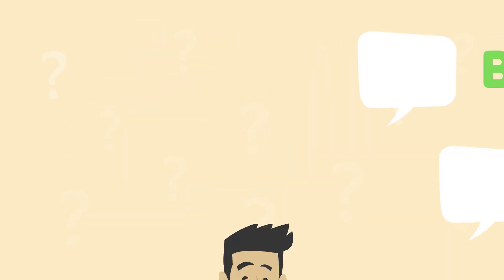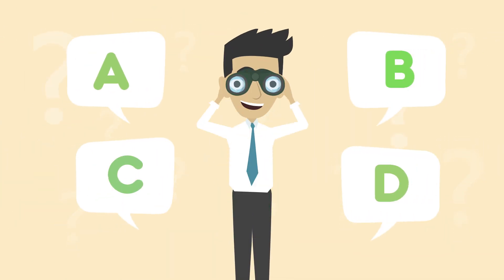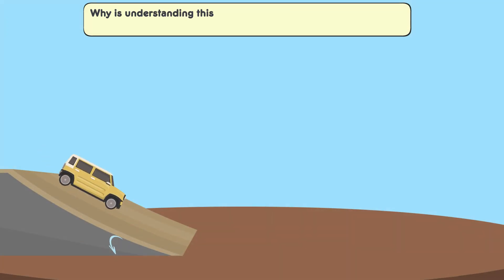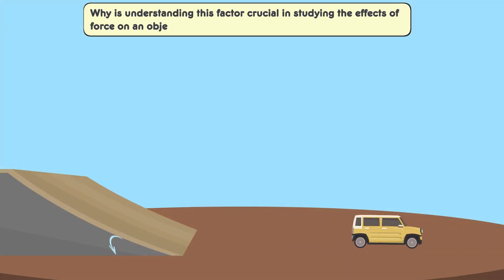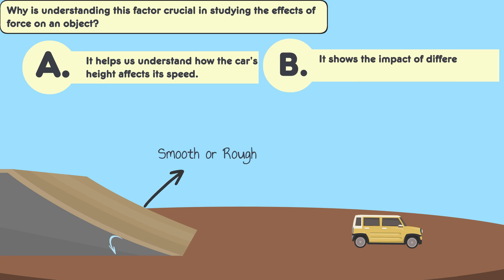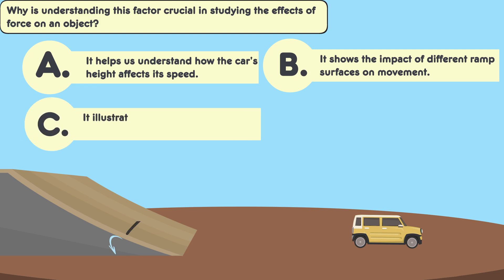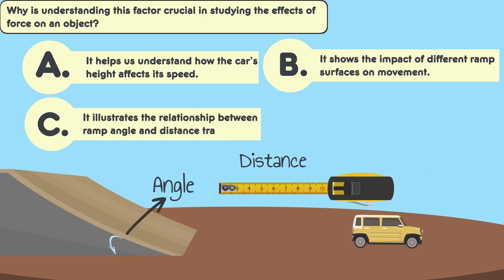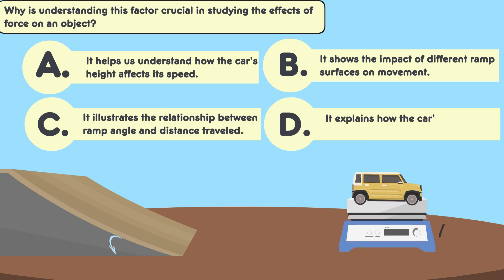Select the correct option and proceed to part B. Here's your question for part B: Why is understanding this factor crucial in studying the effects of force on an object? A. It helps us understand how the car's height affects its speed. B. It shows the impact of different ramp surfaces on movement. C. It illustrates the relationship between ramp angle and distance traveled. D. It explains how the car's weight affects motion dynamics.